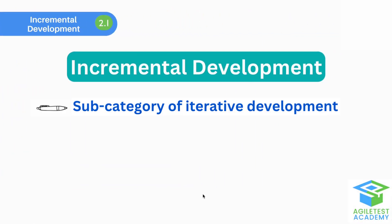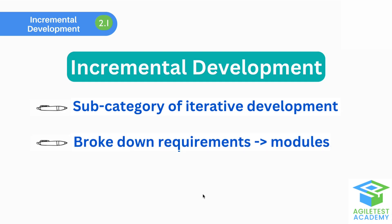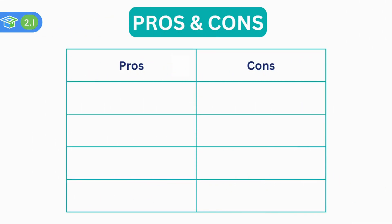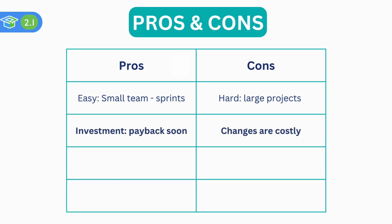A subcategory of iterative refinement is called Incremental Development. It is a type of iterative development, but not all iterative development is incremental. Incremental development is a process where requirements are broken down into multiple standalone modules of the development cycle. Each module goes through analysis, design, implementation, testing, and maintenance phases, and each successive version of the product is usable and adds user-visible functionality to the previous version. It is easier for small teams to develop small sprints correctly than to collaborate on large projects with many ramifications. Although the project investment will pay back very soon, any change to the requirement may be costly to the company.